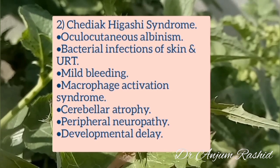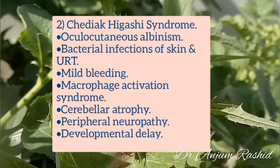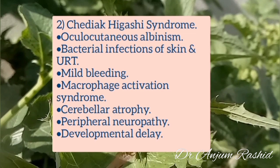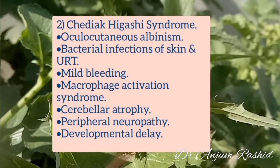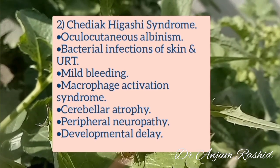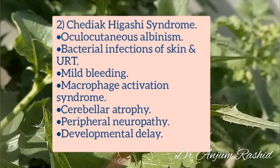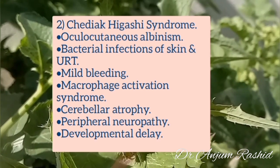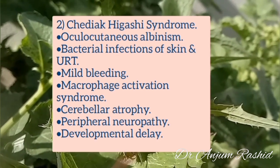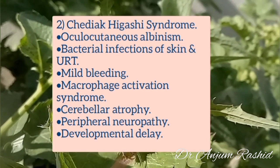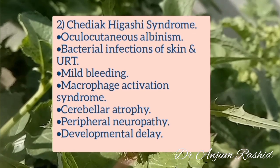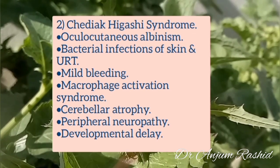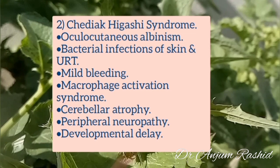Chediak-Higashi syndrome is a form of oculocutaneous albinism in which bacterial infections of the skin and upper respiratory tracts are common. There may be mild bleeding, macrophage activation syndrome, cerebral atrophy, peripheral neuropathy, or developmental delay.